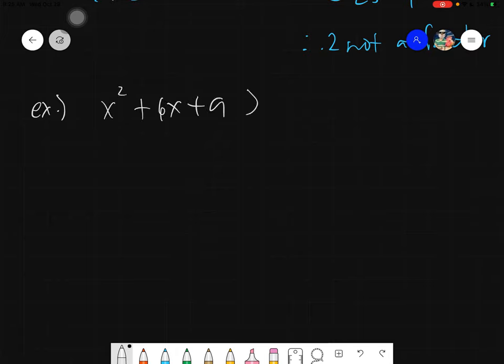x squared plus 6x plus 9, and we are dividing this by x plus 3. So let's check, is x plus 3 a factor of this given? And of course we will use the remainder theorem.